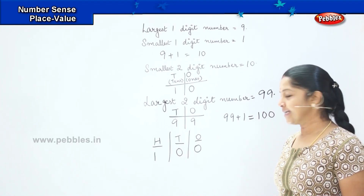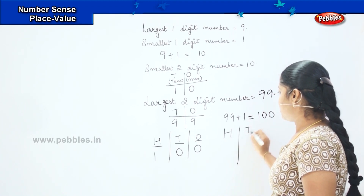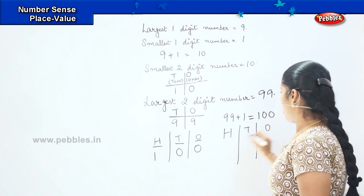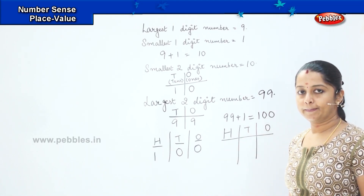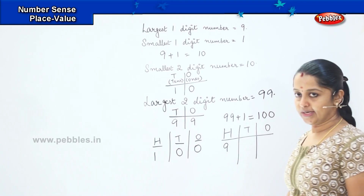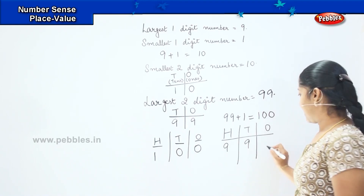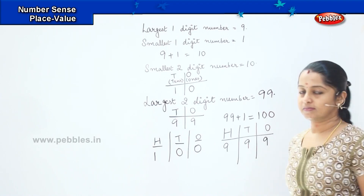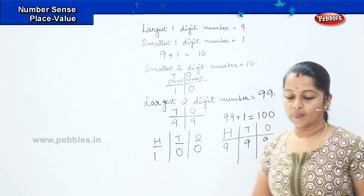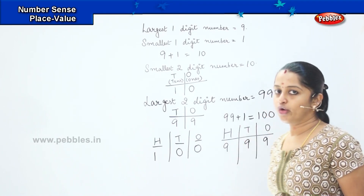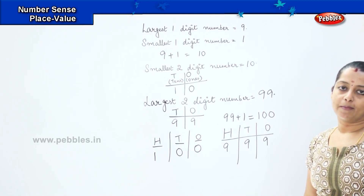How will you write nine hundred and ninety-nine? If I write H, T, O — how will you write nine hundred and ninety-nine? Nine in hundreds, nine in tens, and nine in ones. Shall we do a quick summary of what we have learnt?